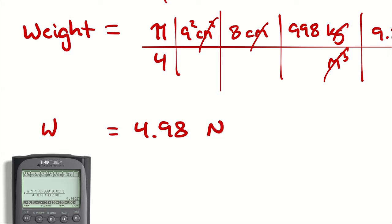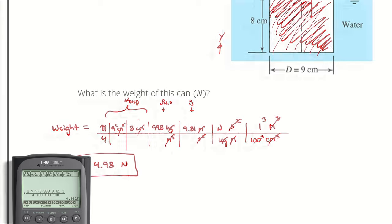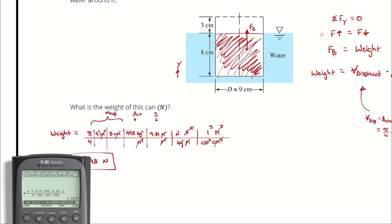So the weight of the can is equal to the weight of the displaced water, and that is 4.98 newtons.